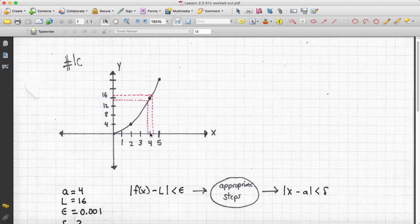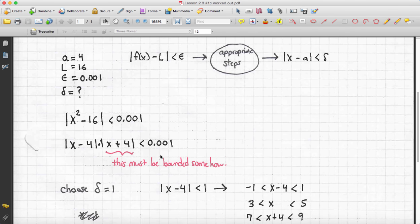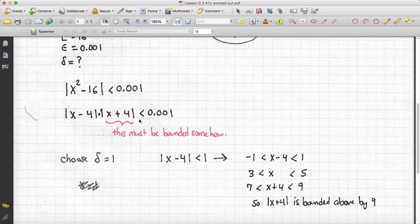And because we're in this bounded delta neighborhood, that means that x plus 4 is bounded above by some constant. In other words, x plus 4 doesn't get any bigger than something. We just have to figure out what that something is.